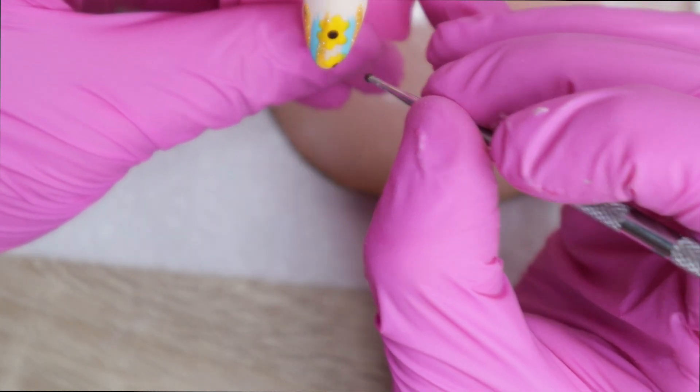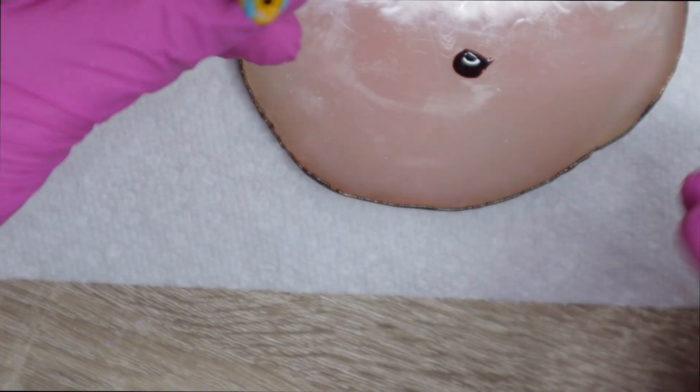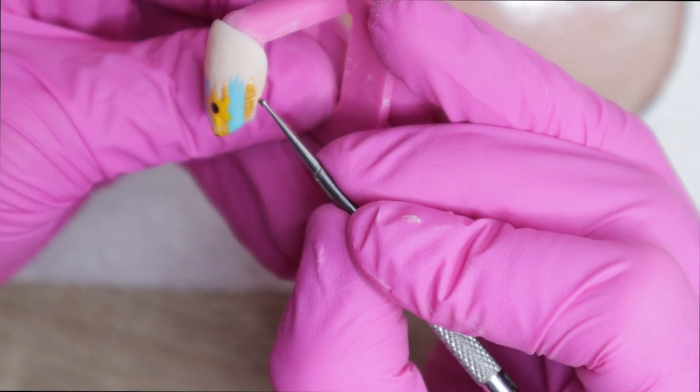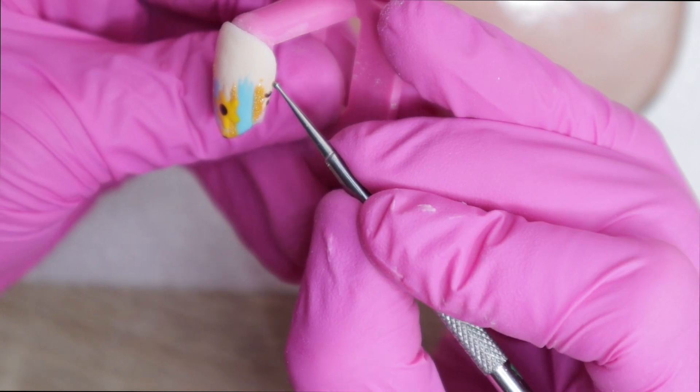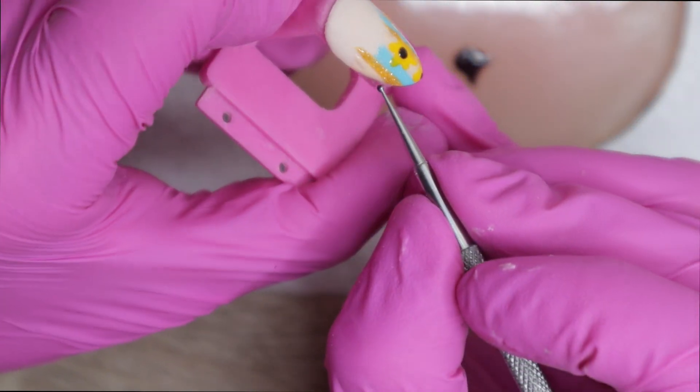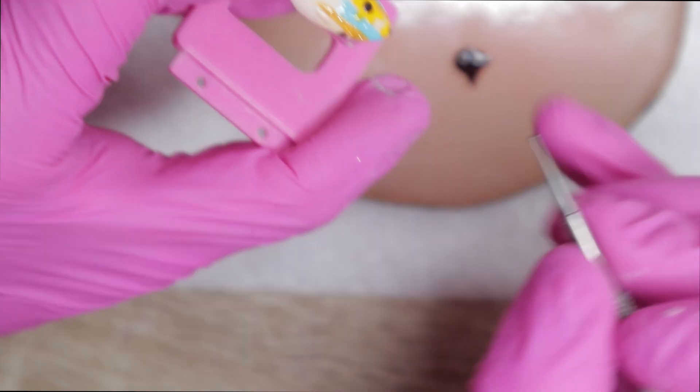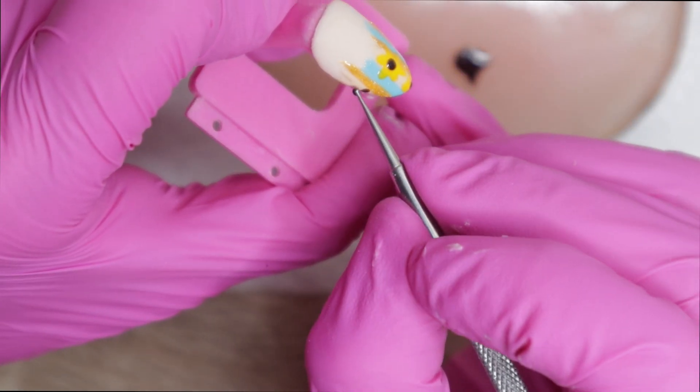Of course, if you wanted a different flower, you can do like white centers. And then I'm going to use a smaller dotting tool and I'm just going to do little designs where I put that nude polish. So I'm going for like an animal print style over the nude polish.